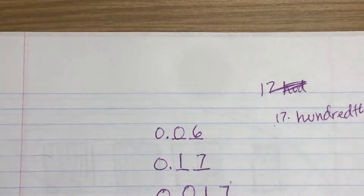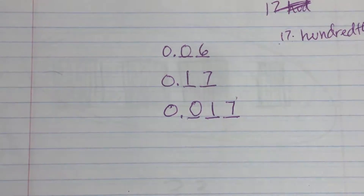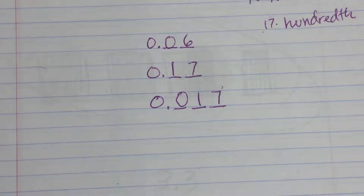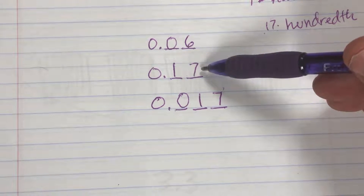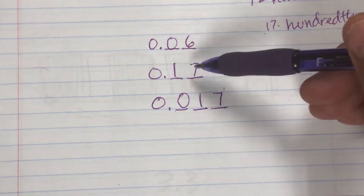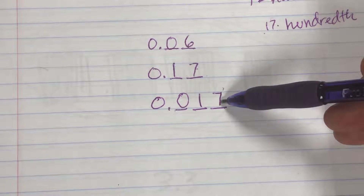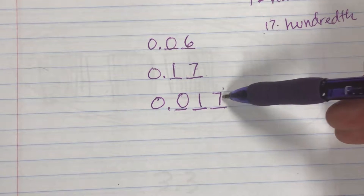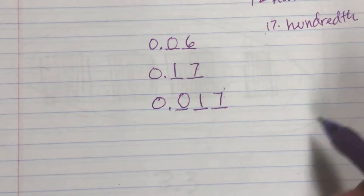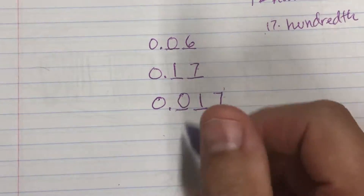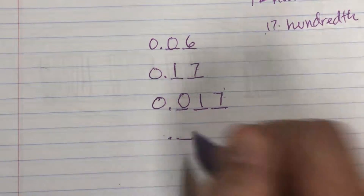I can apply that same rule to figuring out what seventeen tenths would equal. If seventeen hundredths has its last digit in the hundredths place, and seventeen thousandths has its last digit in the thousandths place, then for seventeen tenths I just put the seven in the tenths place — right next to the decimal.